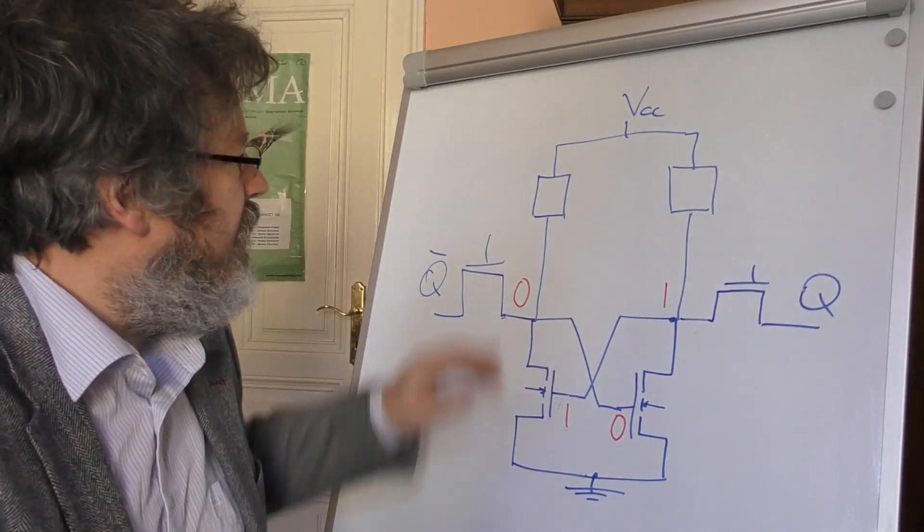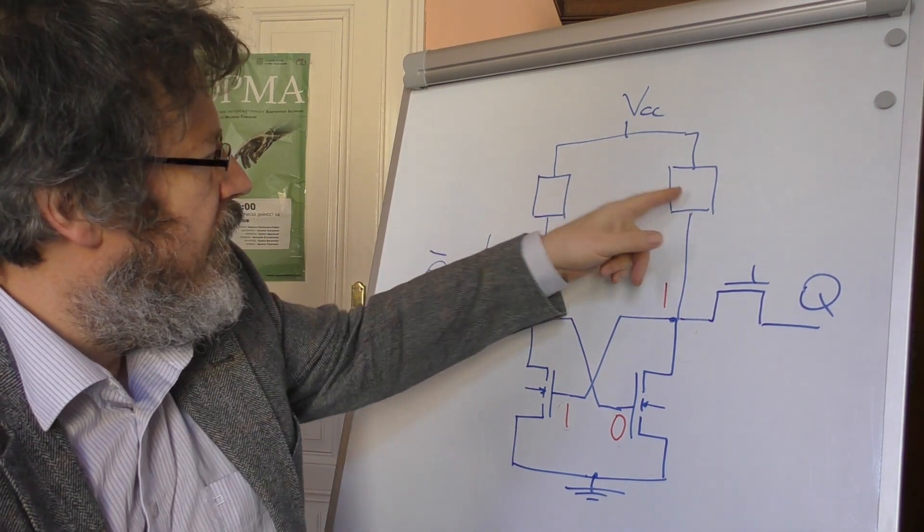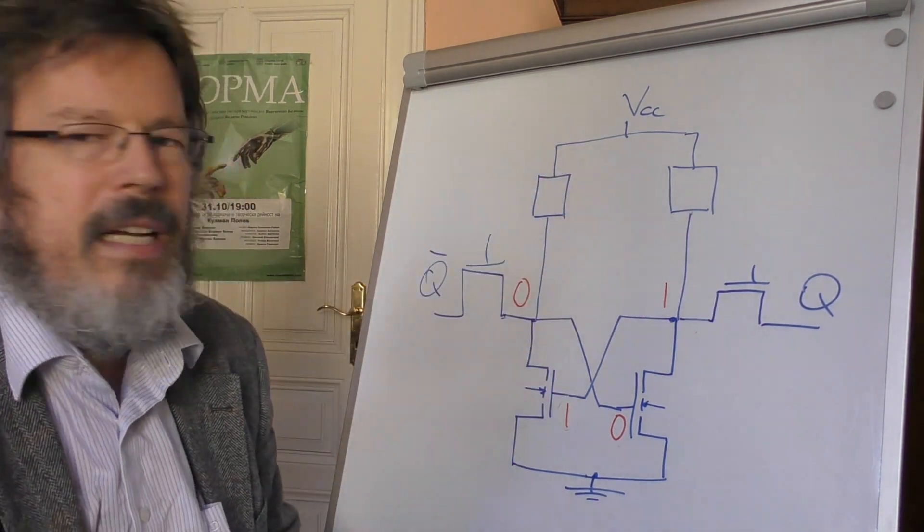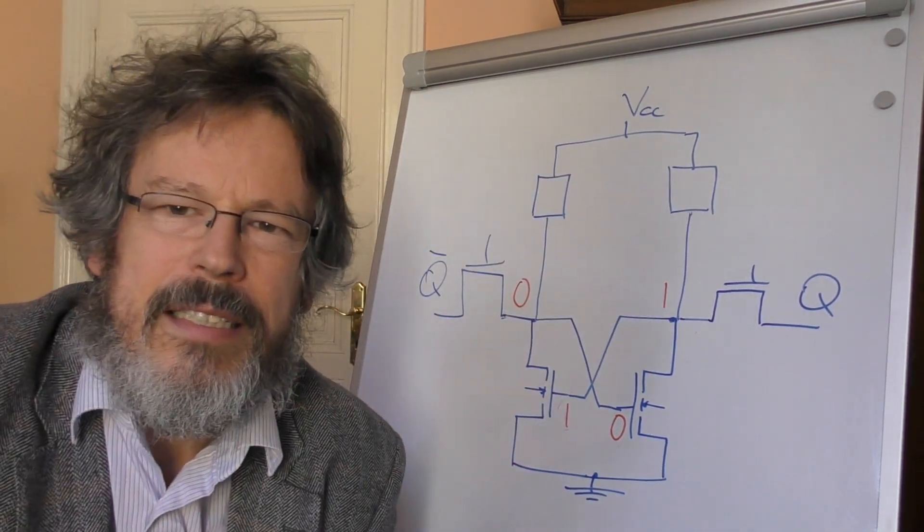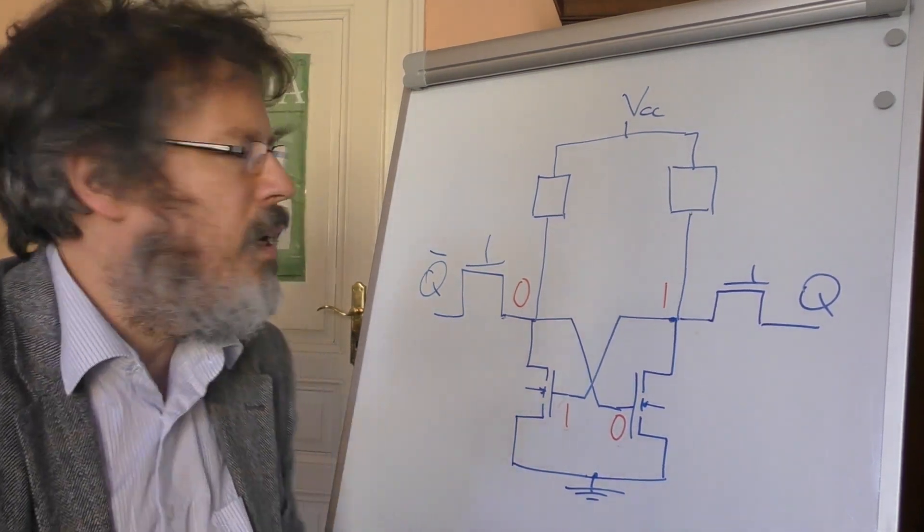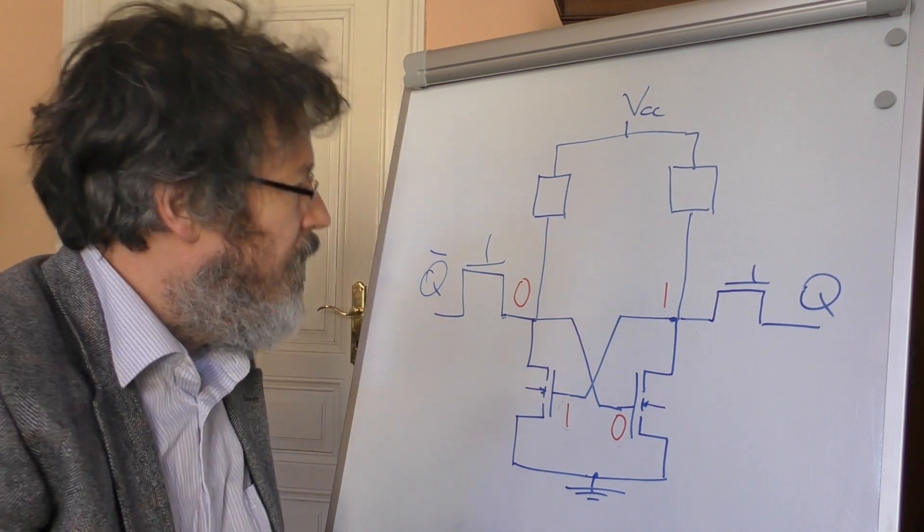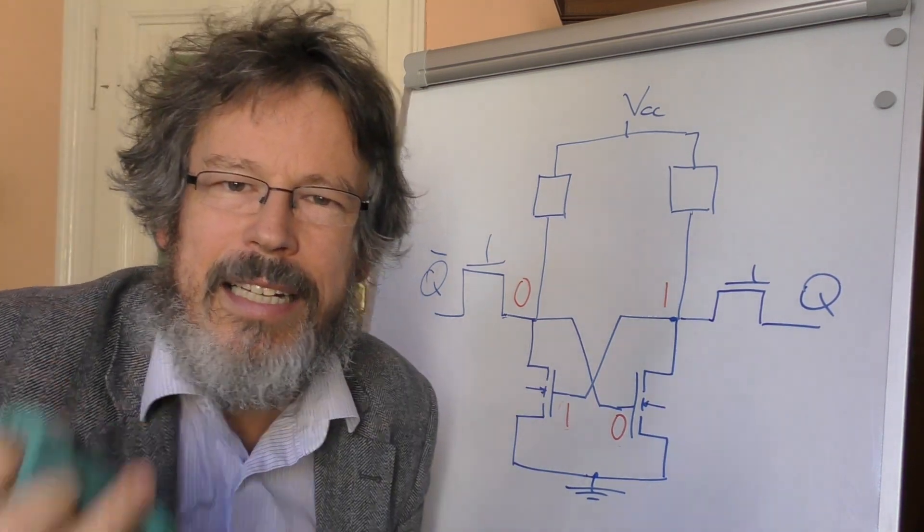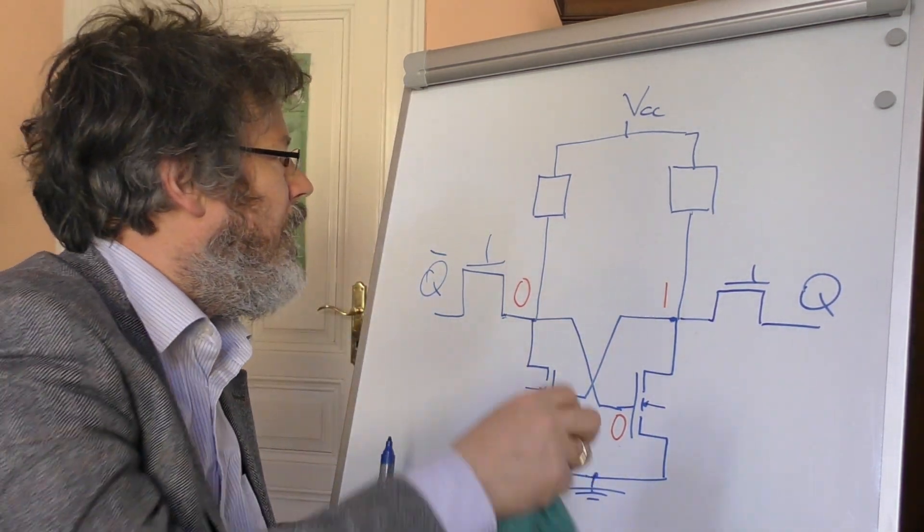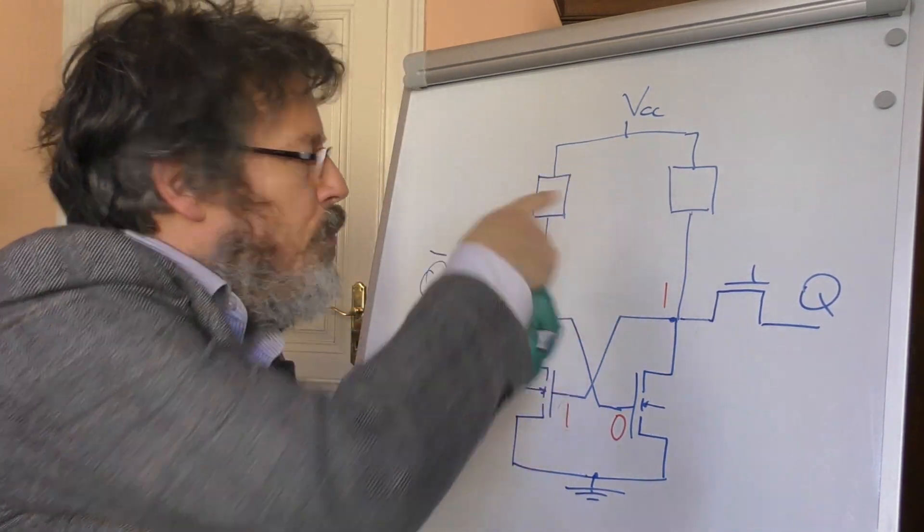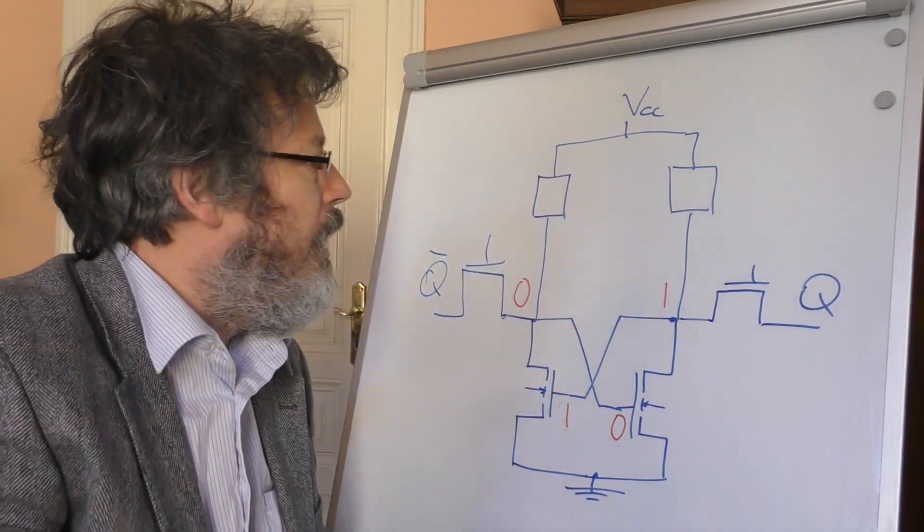What's not nice yet is that we still have these ohmic resistors up here. You can imagine that you have to specify this quite precisely in detail for it to work—it's not a trivial process. And what you'd like to have is to do this with transistors as well. One possibility is simply to install two more NMOS transistors up here that are permanently switched.